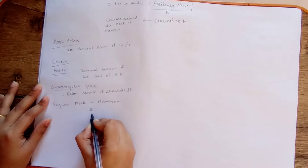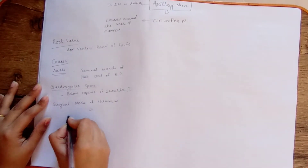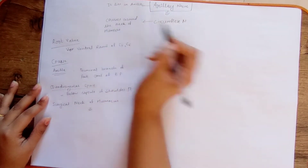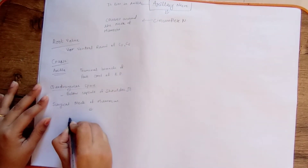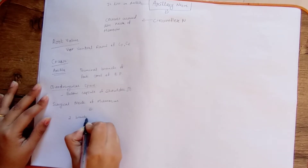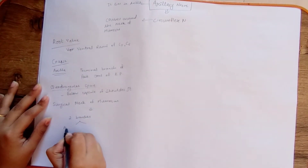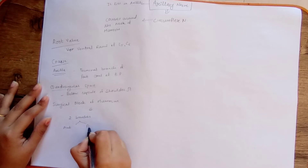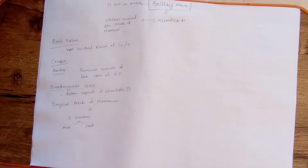It then courses around the surgical neck of the humerus and at the level of the surgical neck of the humerus it divides into anterior and posterior branches.